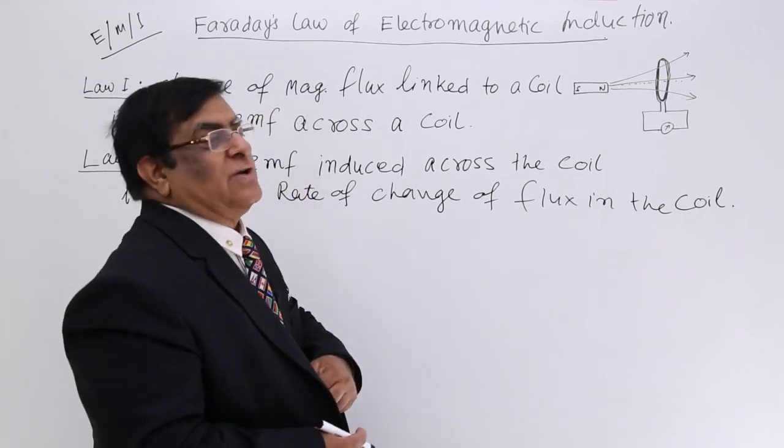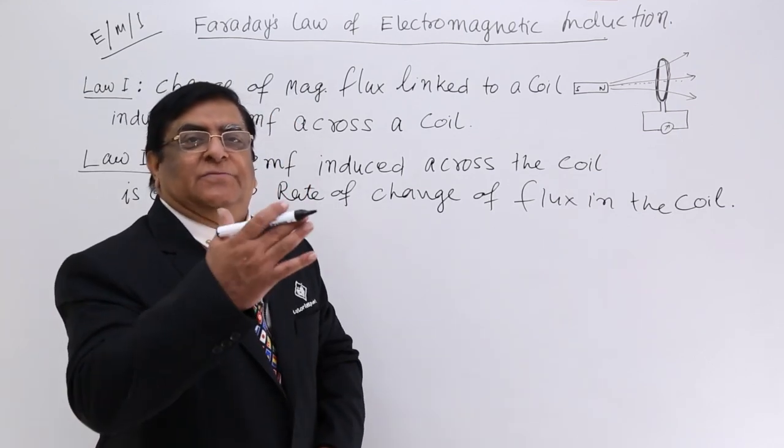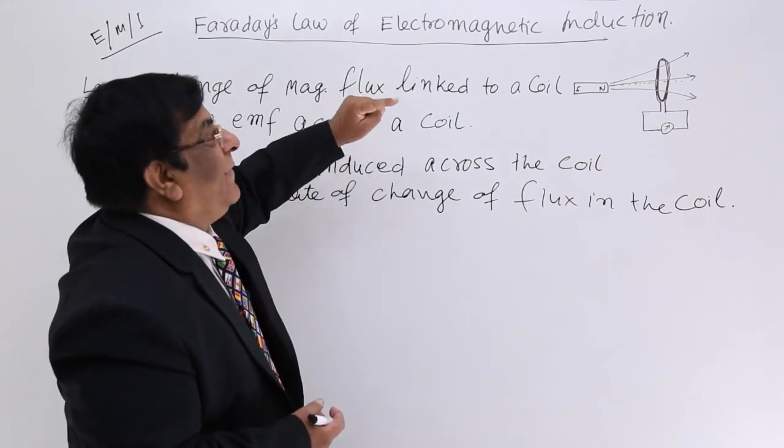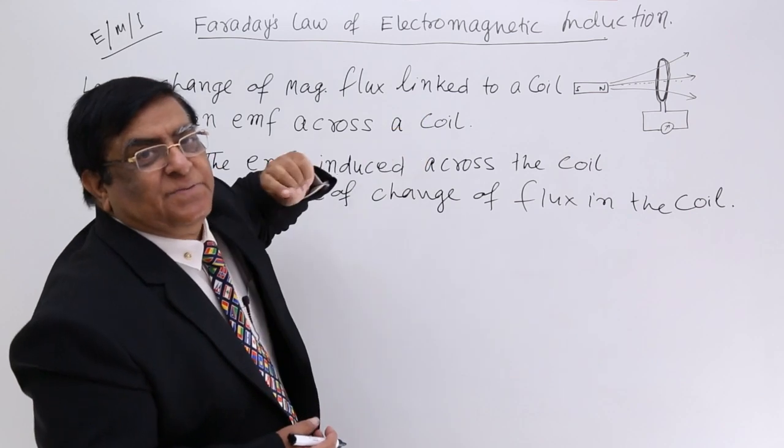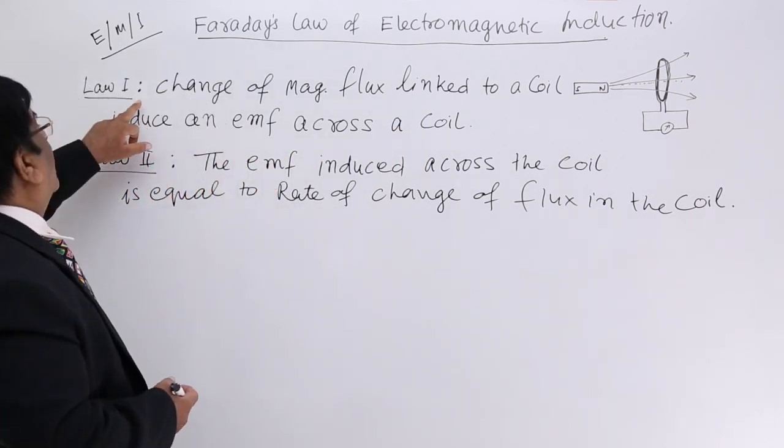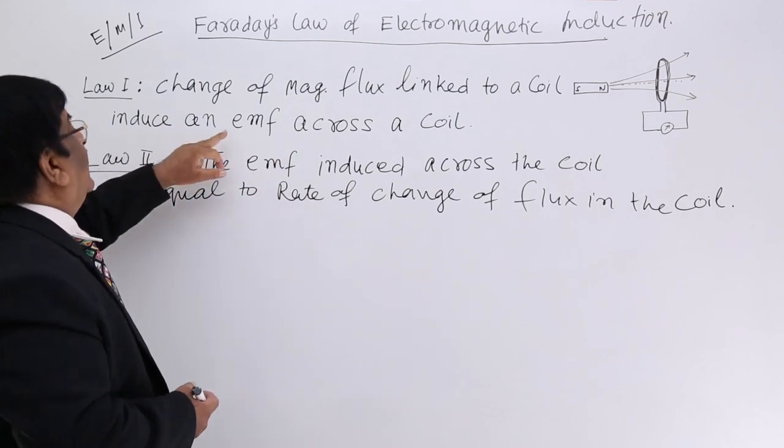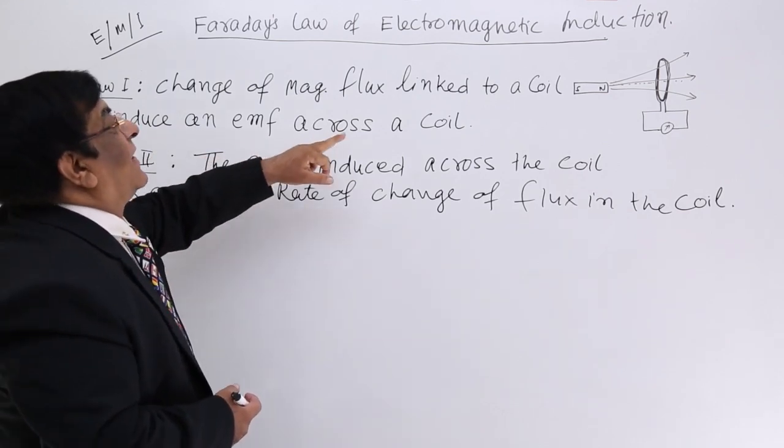This is based on the experiment you have seen in the previous lecture. The law made on the basis of that experiment is law number one: change in magnetic flux linked to a coil induces an EMF across the coil.